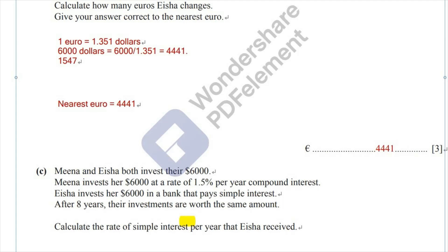Question number 5, part C, the last part. Meena and Isha both invest their $6,000. Meena invests her $6,000 at a rate of 1.5% per year compound interest. Isha invests her $6,000 in a bank that pays simple interest. After 8 years, they both had the same amount — their investments are worth the same. Calculate the rate of simple interest per year that Isha invested.